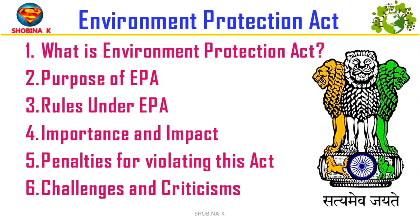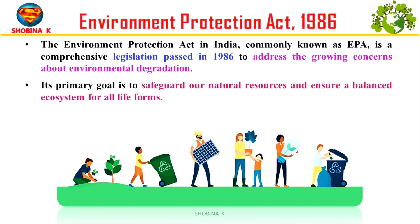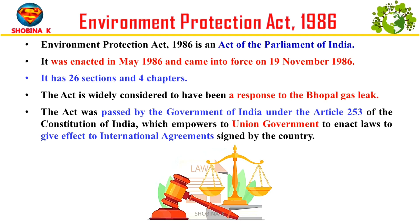Finally, we will discuss the challenges and criticisms the EPA faces. Let's get started. The Environment Protection Act, often referred to as EPA, stands as a cornerstone in India's environmental legislation. It addresses environmental concerns and protects natural resources in India. This act was enacted by the Parliament of India in May 1986 and came into force on 19 November 1986. It has 26 sections and four chapters, and was largely a response to the Bhopal gas leak disaster.